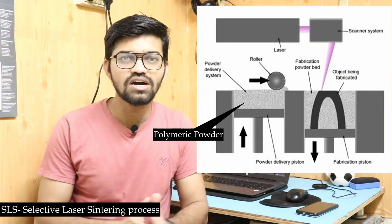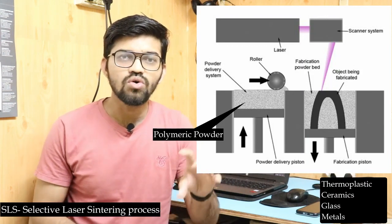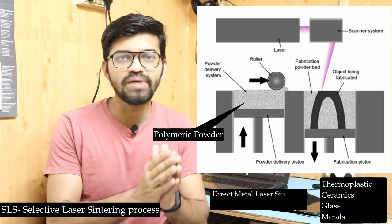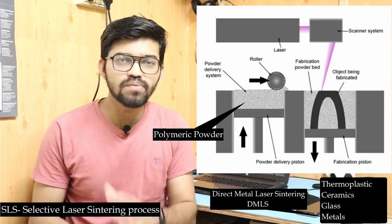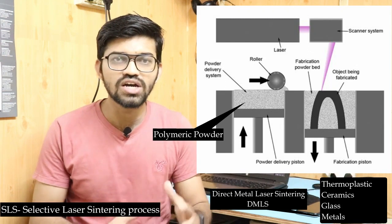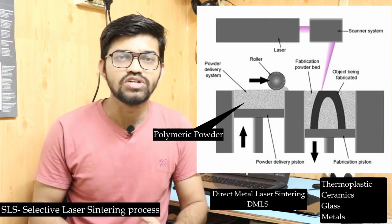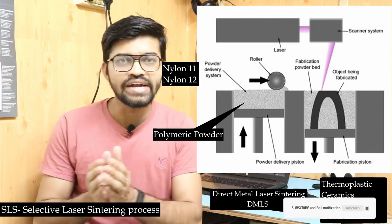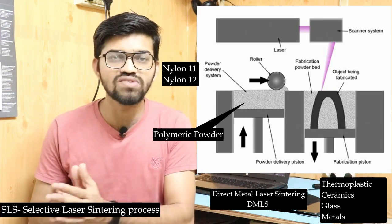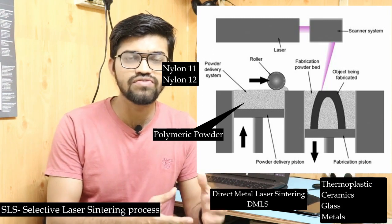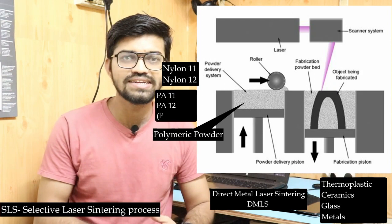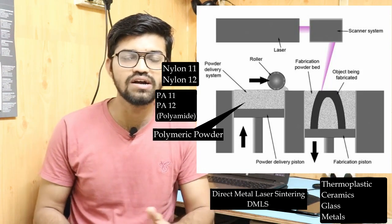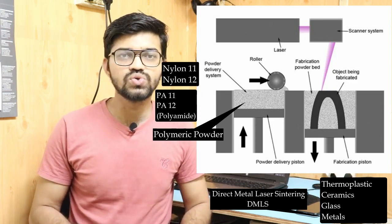The powder used in SLS can be plastic, ceramics, glass, or metals. If metals are used in powder form, that technology is called Direct Metal Laser Sintering — DMLS — which will be covered in the next video. In this video we focus on plastic powder. The majority of material used is nylon, specifically nylon 11 and nylon 12, also referred to as PA11 and PA12 — polyamides 11 and 12 — where the numbers represent the carbon content of the material.